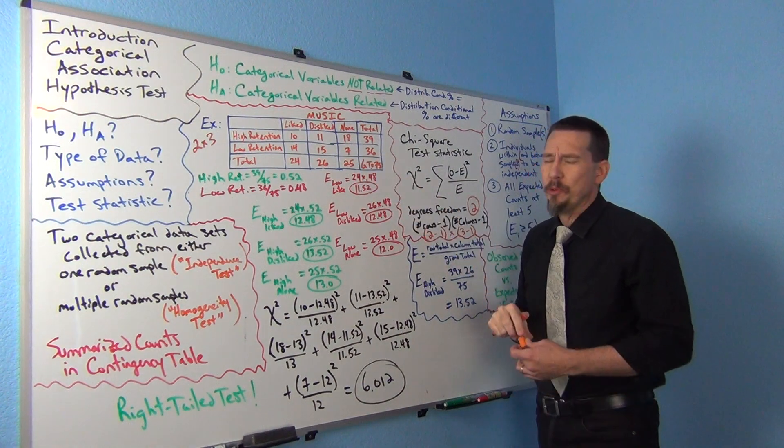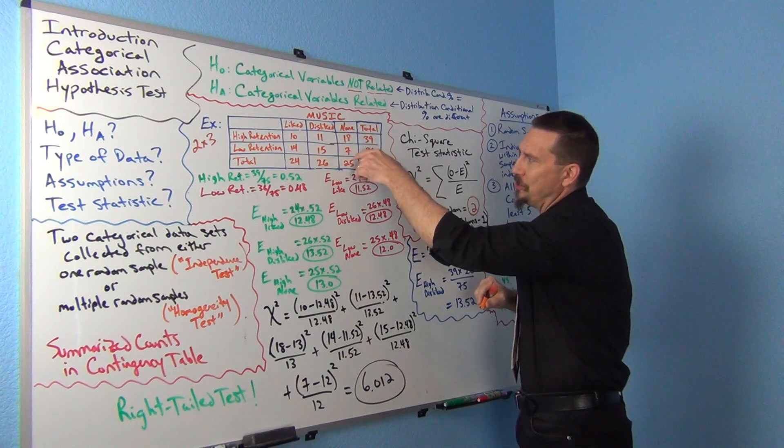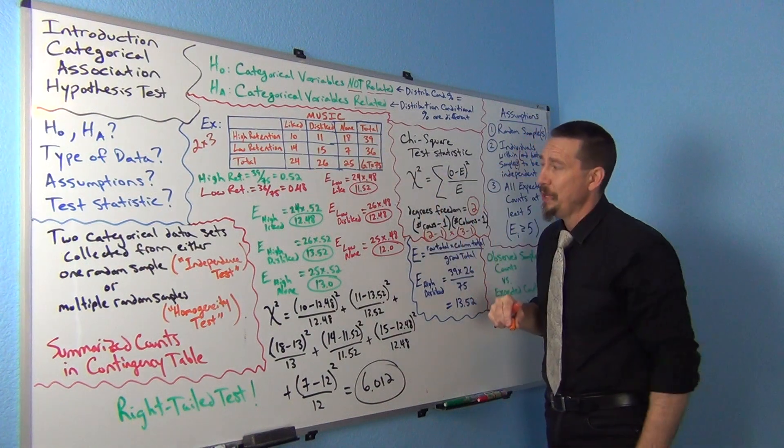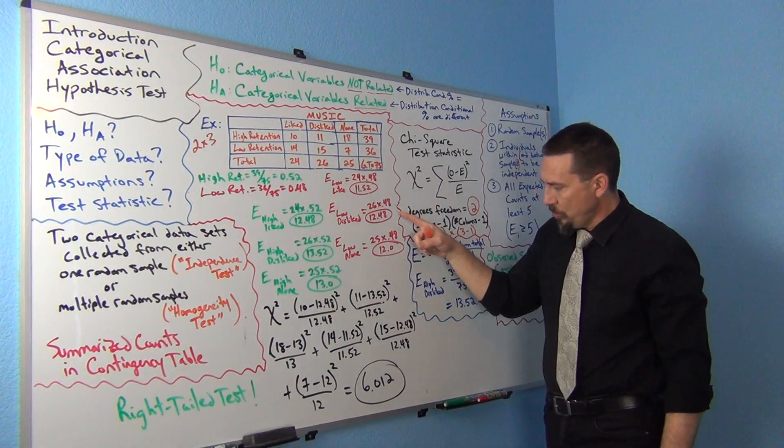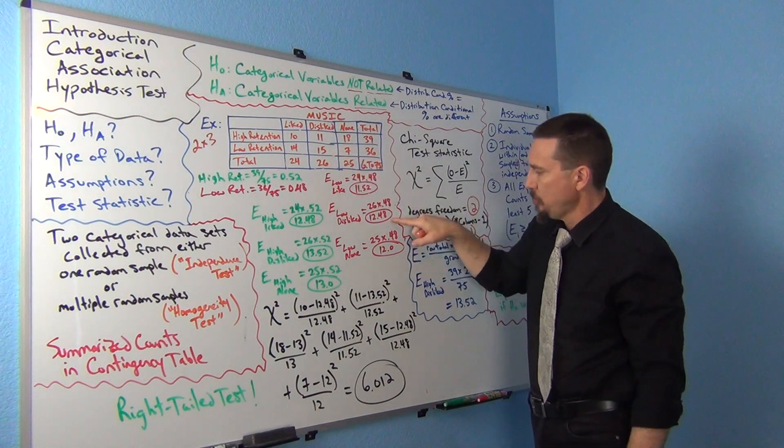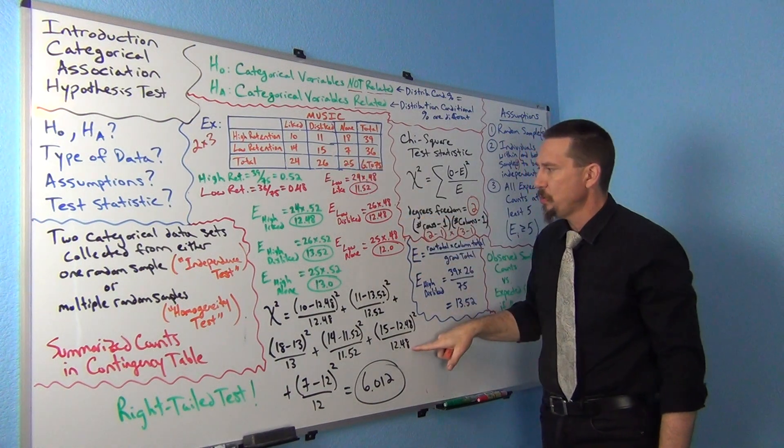A lot of times in computer programs they'll put the expected count right next to the observed count, just so you don't mess them up. Then again we got 15 minus 12.48 squared divided by 12.48.